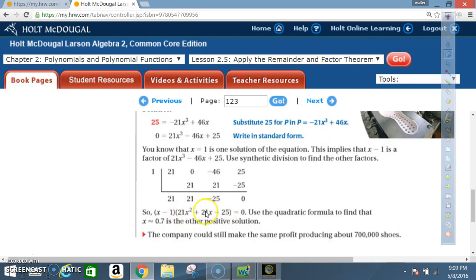So use the quadratic formula to find that x is approximately equal to 0.7, and that is the other positive solution. The company could still make the same profit producing about 700,000 shoes.